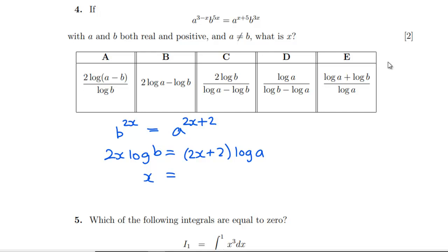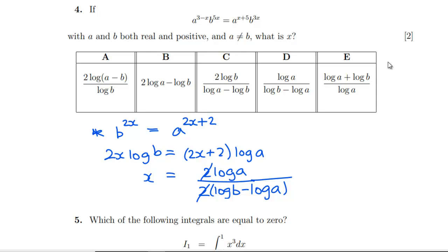Rearranging: x(log b − log a) = log a, so x = log a / (log b − log a). Cancelling the factor of 2 that we could have removed earlier, and checking against the answer choices, it matches D. You have to use the given answers to some extent to see what format they're looking for — leaving log b and log a as separate terms is the key.